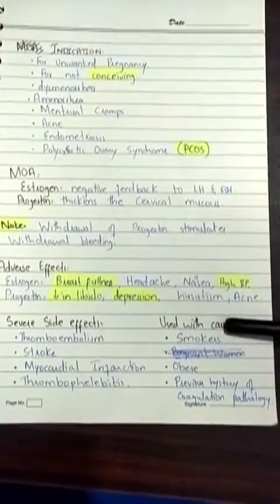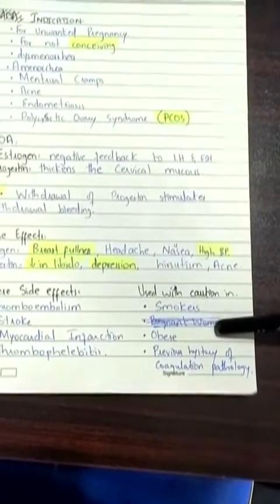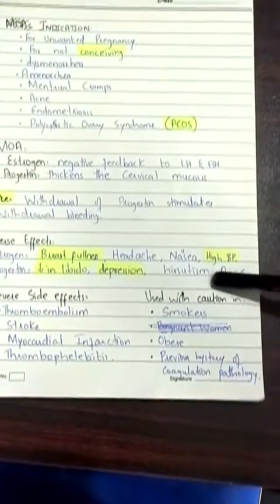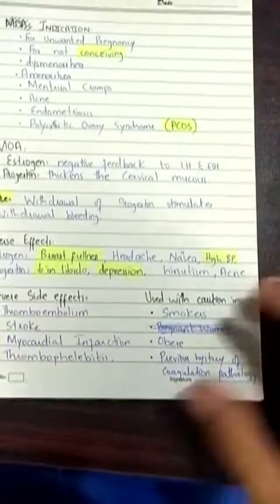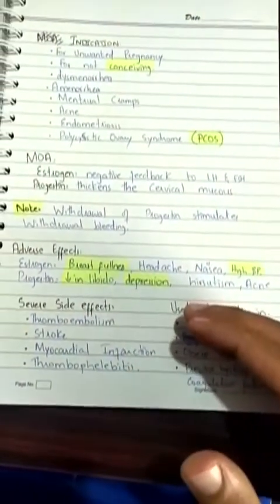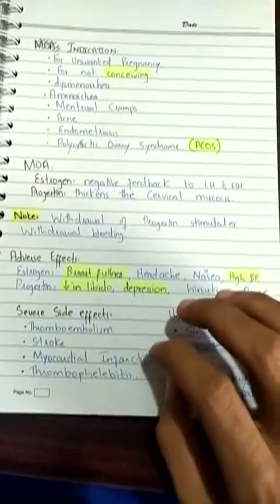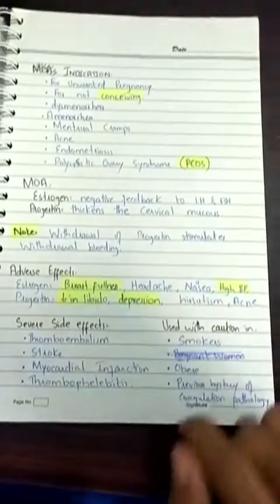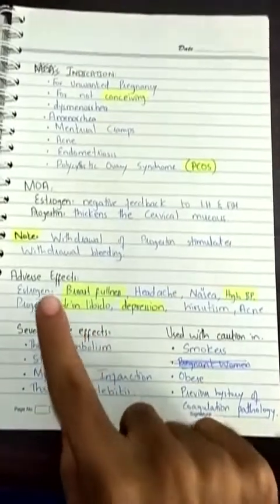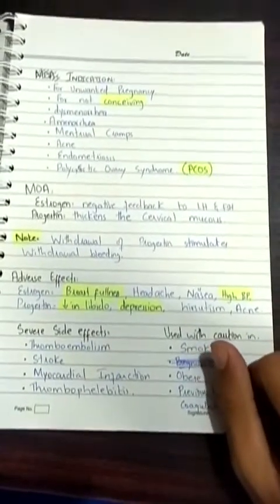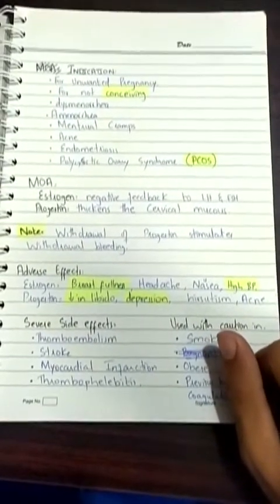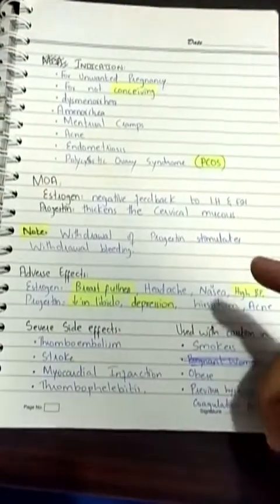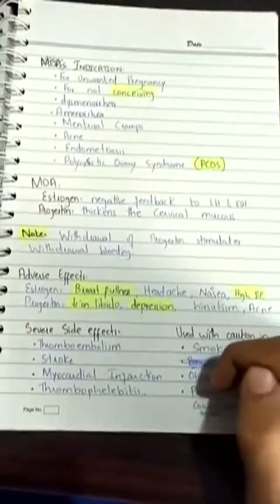Certain patients should not use estrogen-containing contraceptives: smokers, patients with obesity, and those with a previous history of coagulation pathology. These patients all share blood-related or high-cholesterol-level problems, which is why estrogen therapy for contraception is contraindicated in them. This has been Med Videos Crash Course — please subscribe, like the video, and leave your feedback in the comments below. Thanks for watching.